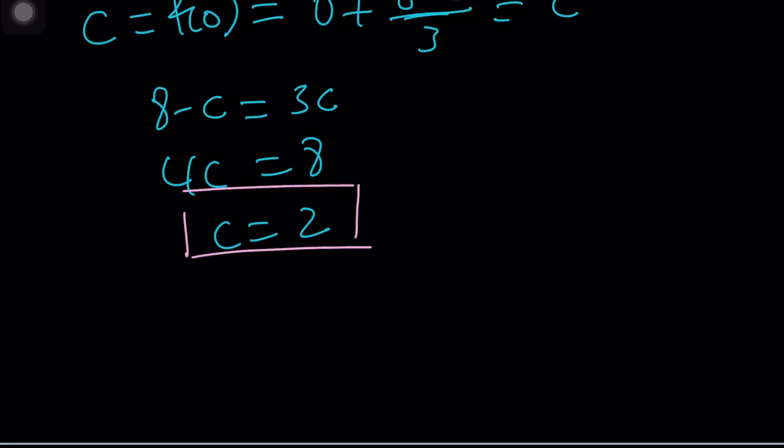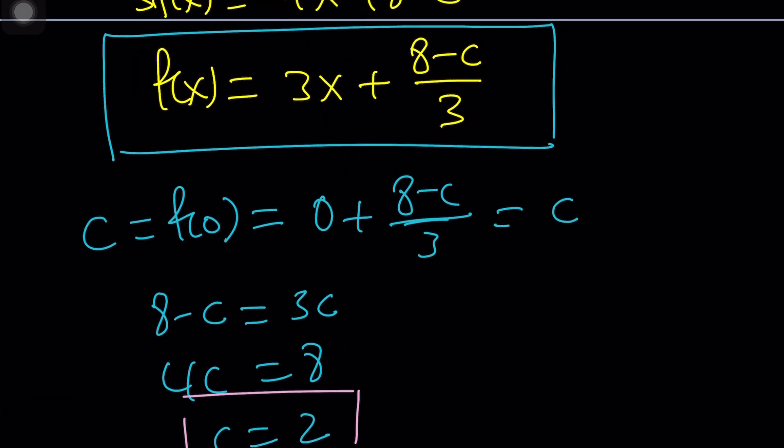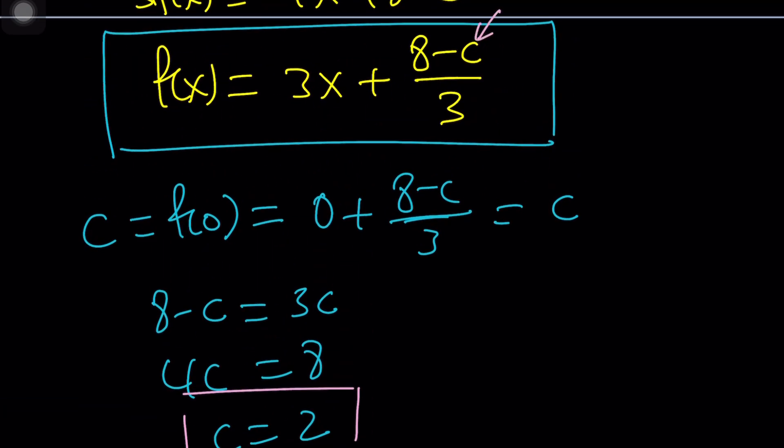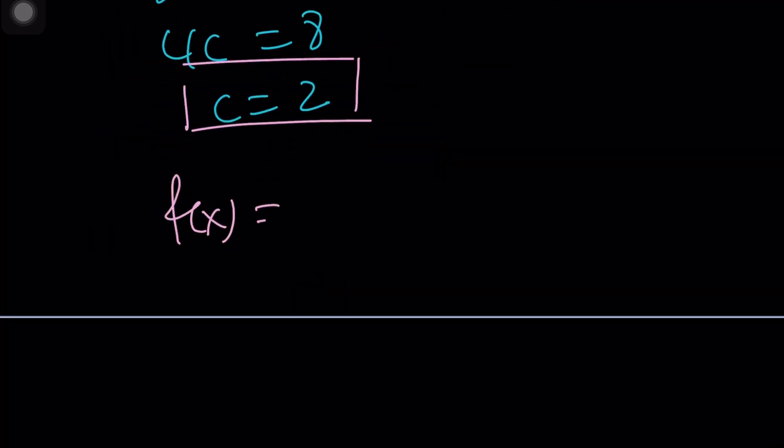I don't have 2c, so I can't really use that joke. But at least I said something. c equals 2 gives us a really nice result. Because I can go ahead and now plug it in. f of x would be 3x plus 8 minus c, which is 8 minus 2, 6, 6 divided by 3 is 2. So, f of x is 3x plus 2.